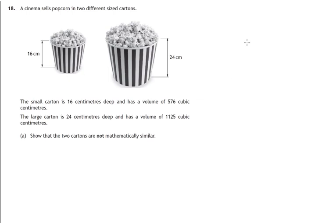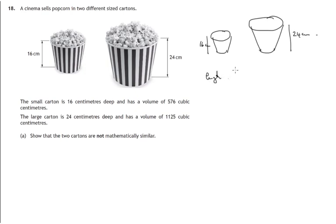So let's look at these. There's the small carton and there's the large carton. The facts we know: 16 centimeters for the height of the small carton, 24 centimeters for the height of the large carton. So the length scale factor — we'll be multiplying 16 by 24 over 16. Put the large number on top to find the scale factor. Notice that 16 times 24 over 16: the 16s cancel, so to get from 16 up to 24 we multiply by 24 over 16.